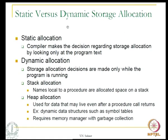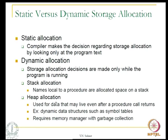We have two types of storage allocation: static allocation and dynamic allocation. In static allocation, the compiler makes decisions regarding storage by looking at the program text alone, with no other consideration. In dynamic allocation, storage decisions are made only when the program is running. In the static case, the compiler itself makes the decision; nothing is left to the runtime system. Under dynamic allocation, there are two possible types: stack allocation and heap allocation.